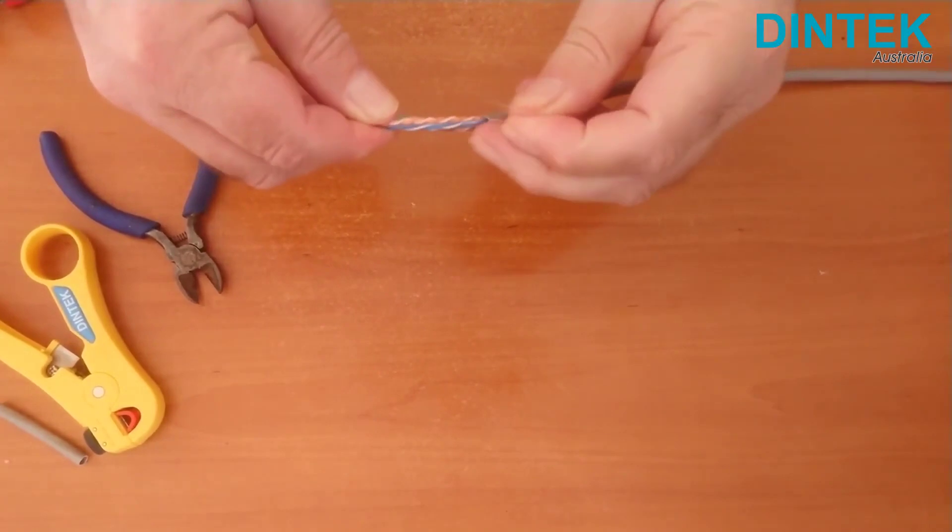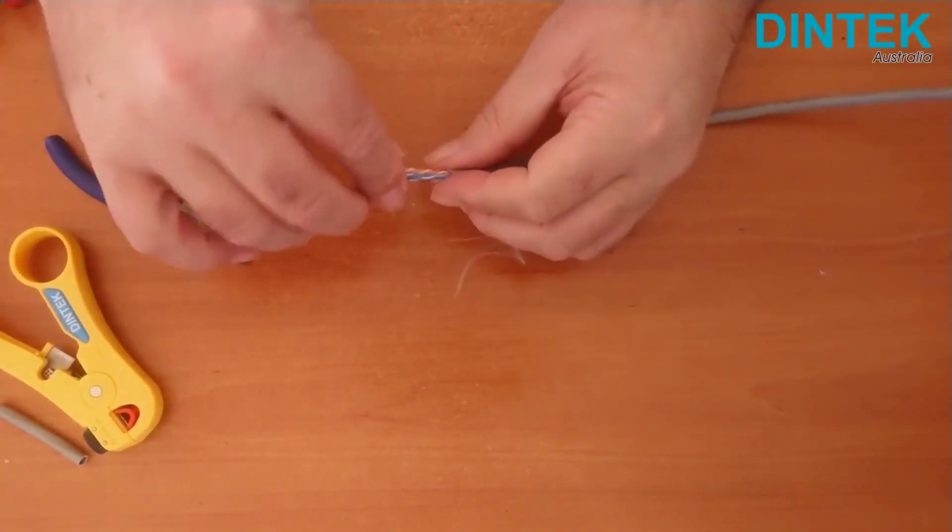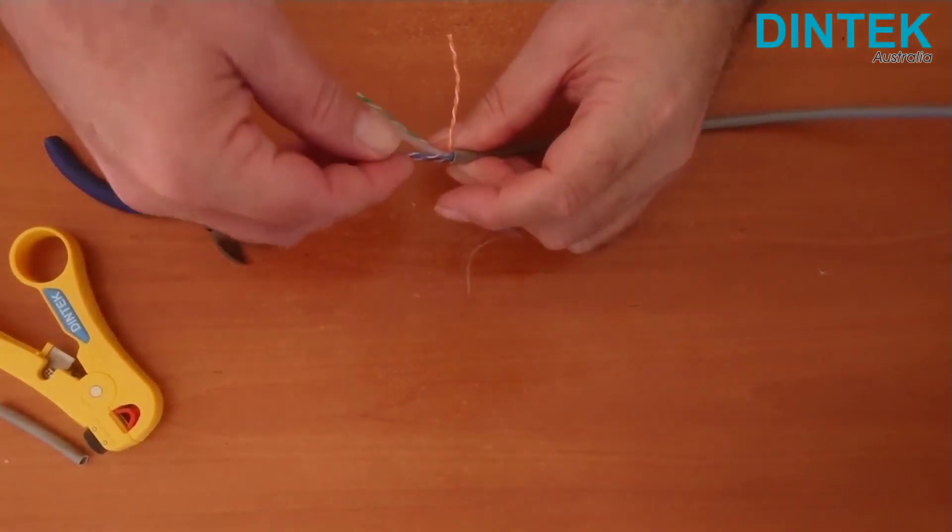Cut off the excess cord. Separate the wires and cut out the central spacer.